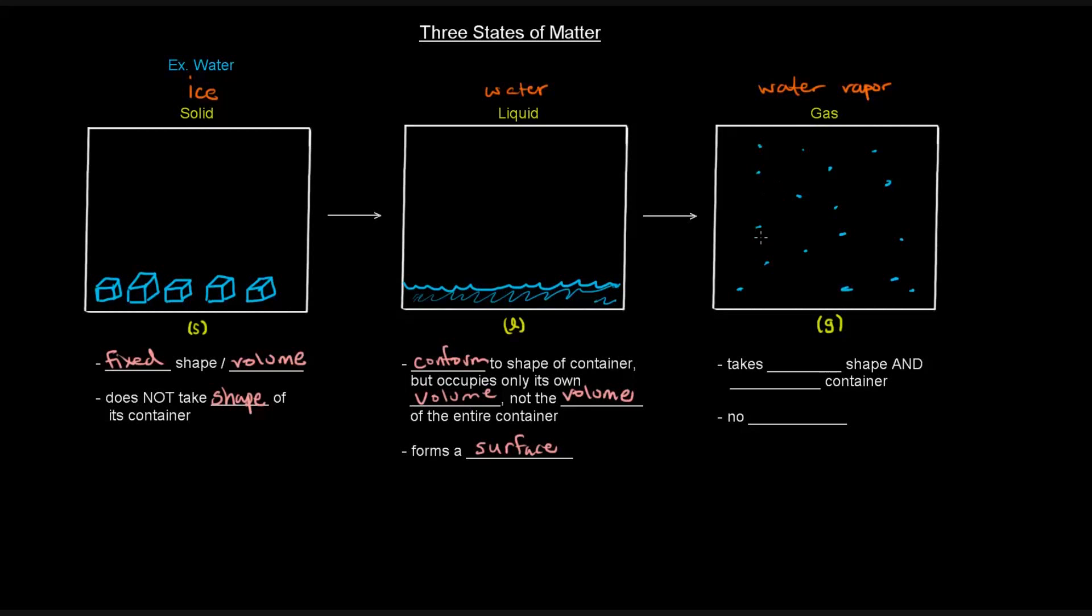Gases, however, they take the entire shape and volume of their containers. They fill the entire container. So if you have a small cup and you have it shut and you initially have some liquid in there, some liquid water, and you boil it and it all becomes gaseous water vapor, that water vapor will take up the entire volume of the container. And it takes the shape as well because it fills the entire space of its container. And because of this, it'll have no surface. So these are just some details.